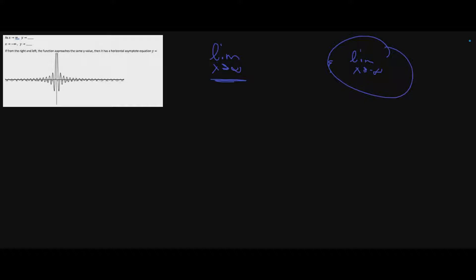As we approach infinity to the right and our x values get really large, what happens to our y values? Well, they're getting smaller and smaller and approaching zero. The same thing applies to the left — it doesn't matter which direction, we're going to approach zero.